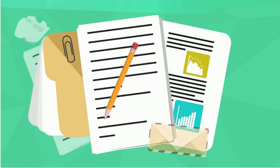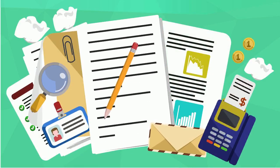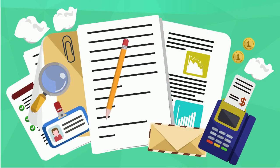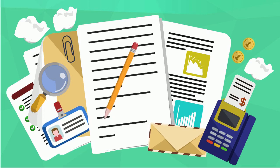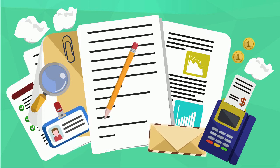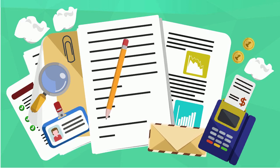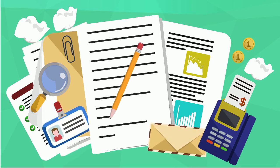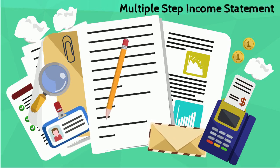Now that we're dealing with inventory and sales accounts, our income statement will change a bit. Instead of listing all the revenues first and then all the expenses, we can reorganize the income statement to better fit a company with inventory sales and to report multiple types of profit. This new format is referred to as a multiple-step or multi-step income statement.